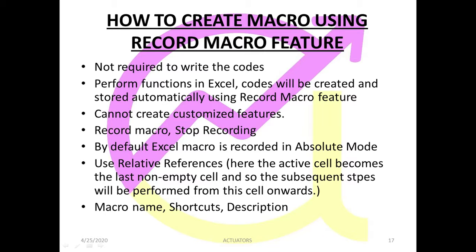This way of writing a macro by recording is very simple and it doesn't require you to write the codes. You just have to record your keystrokes and your mouse steps, and the steps you record will get converted into codes automatically. You don't have to manually write any codes. Performing functions in Excel will have codes created and stored automatically using the record macro feature.